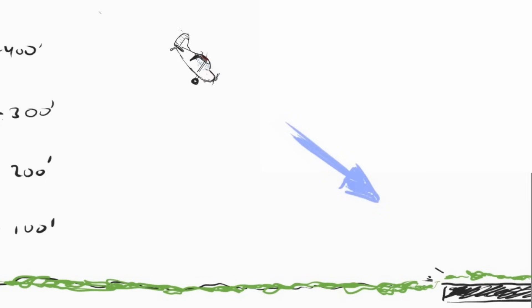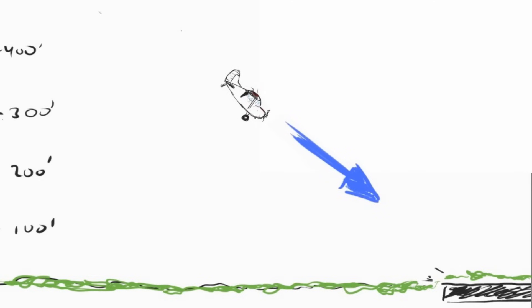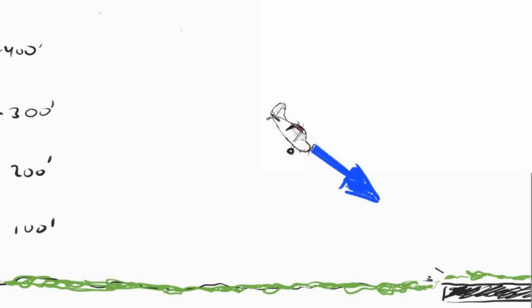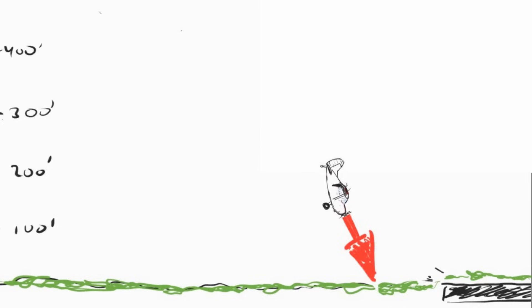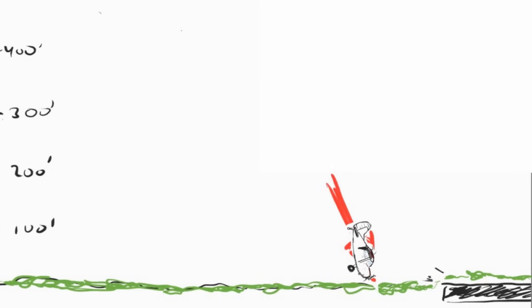While that rate of descent is high, it's not excessive. Airspeed remained about 75 mph with small corrections. At about 200 feet above the ground, the airplane abruptly pitched nose down and impacted terrain about a quarter mile short of the runway. Both people aboard, unfortunately, perished.